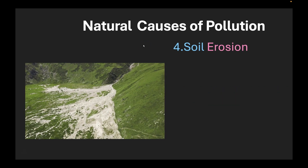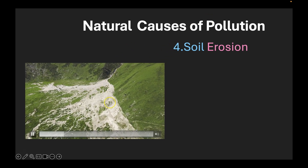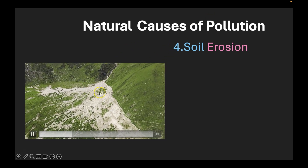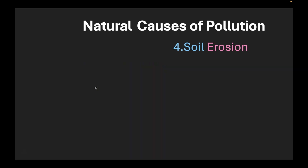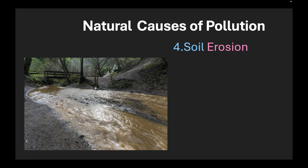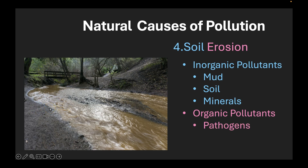Next let's discuss soil erosion. Often what happens is when streams flow down a slope or flow at high velocity they carry minerals along with them and that goes and settles in water bodies. Soil erosion causes pollution by spreading inorganic pollutants primarily — things like mud, soil, minerals are pushed into the water. Organic pollutants can also be introduced due to soil erosion. If there's a pathogen in the mud or in the soil, that can also get pulled into the water.